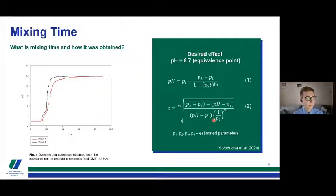What is mixing time and how it was obtained? Mixing time is one of the measures of a mixing process efficiency. It can be described as a time after which the desired effect will be obtained. In this case, pH equal to 8.7, the equivalence point of the chosen reaction.